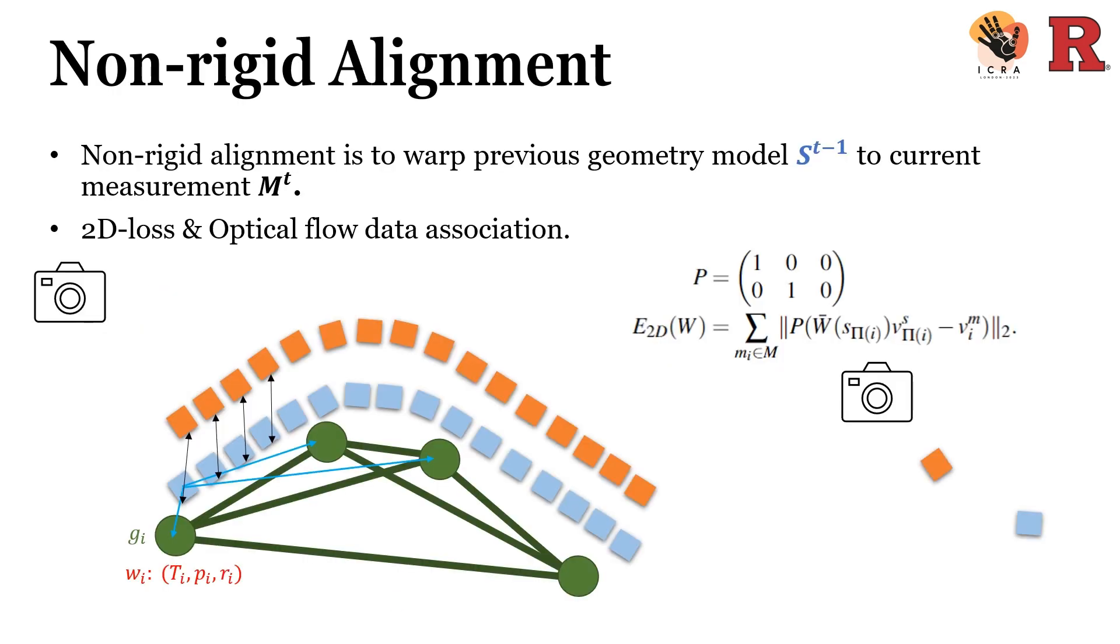The 2D loss formula is written on the right side. Again, V_S here represents a point on the previous geometry, V_M here is a point on the measurement. These two points are matched based on optical flow. This 2D loss will drag the geometry point to the same camera ray with the measurement point.